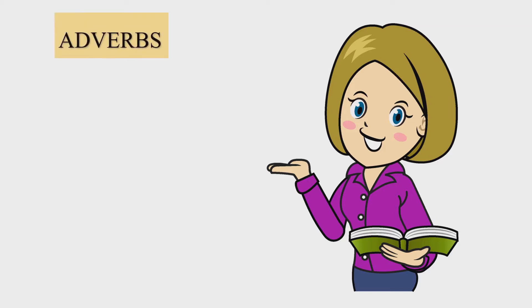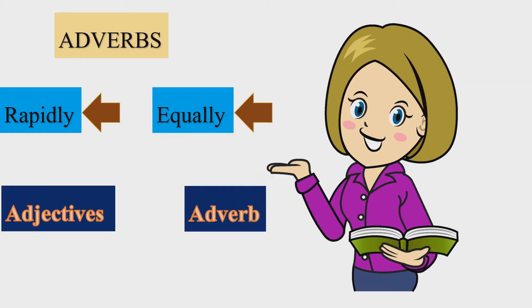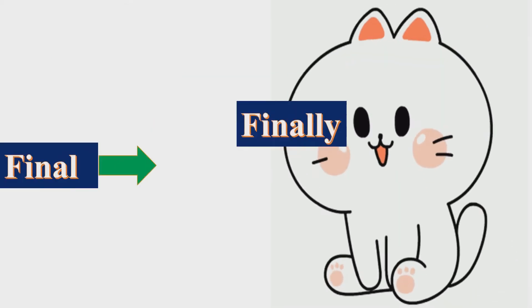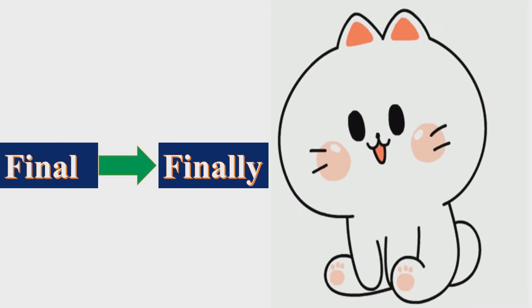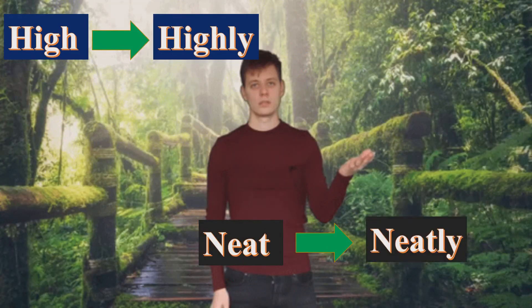I am going to teach you how we can change adjectives. Want to know? How? By adding 'ly' at the end. For example: High becomes Highly. Neat becomes Neatly.